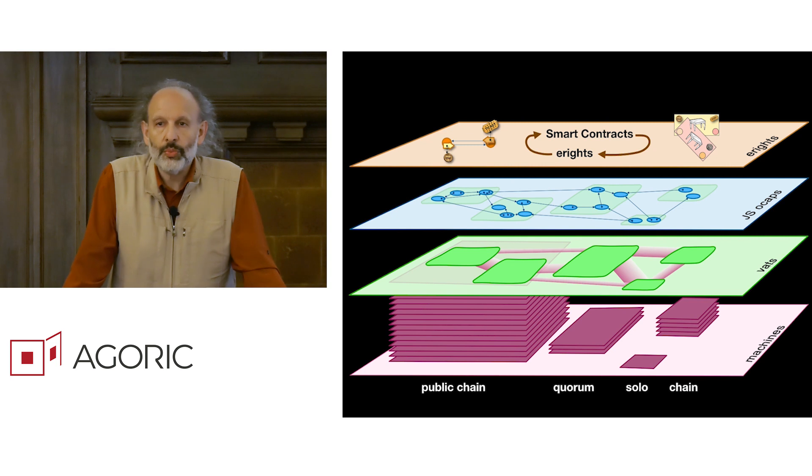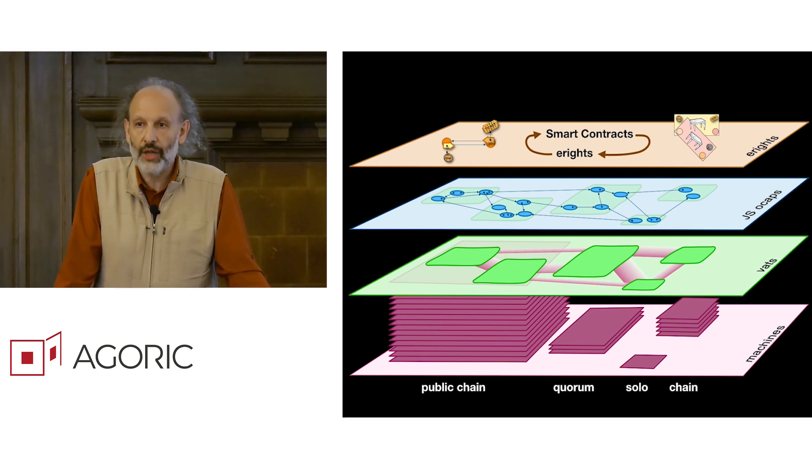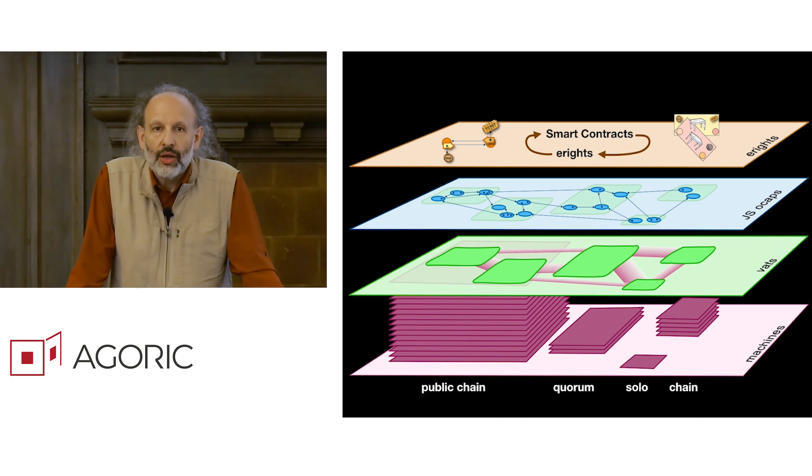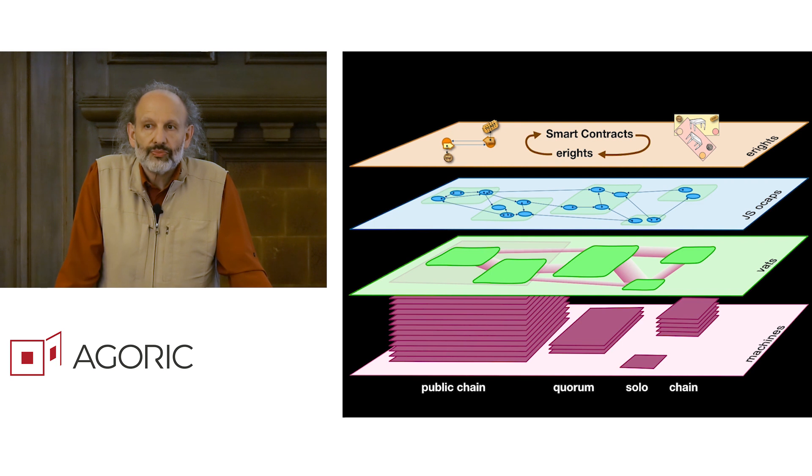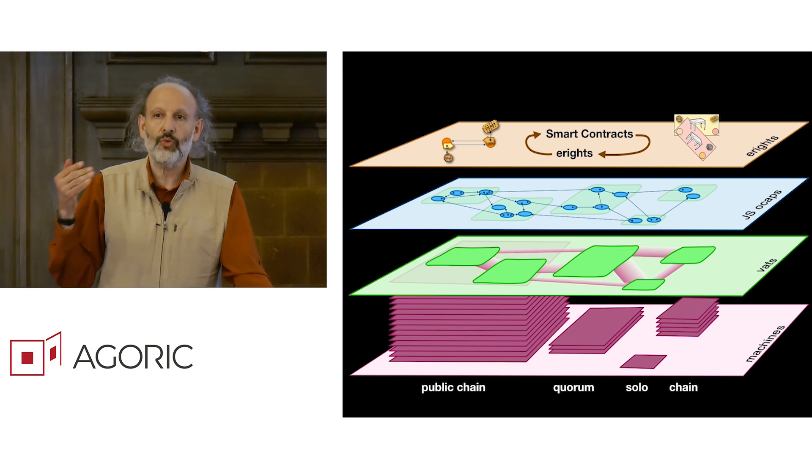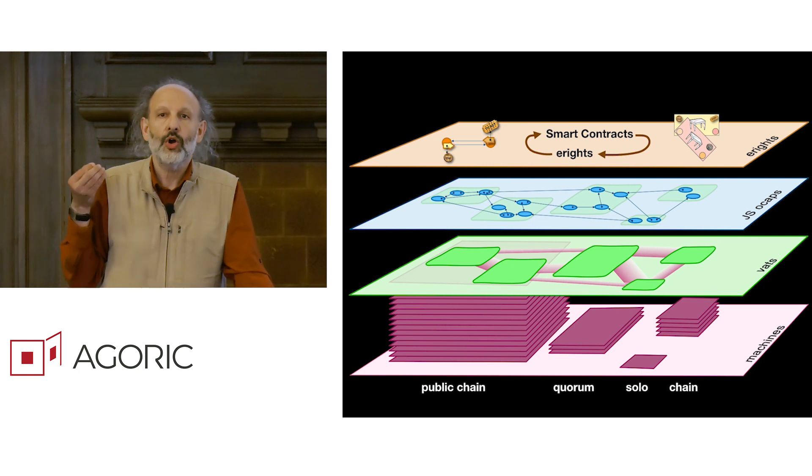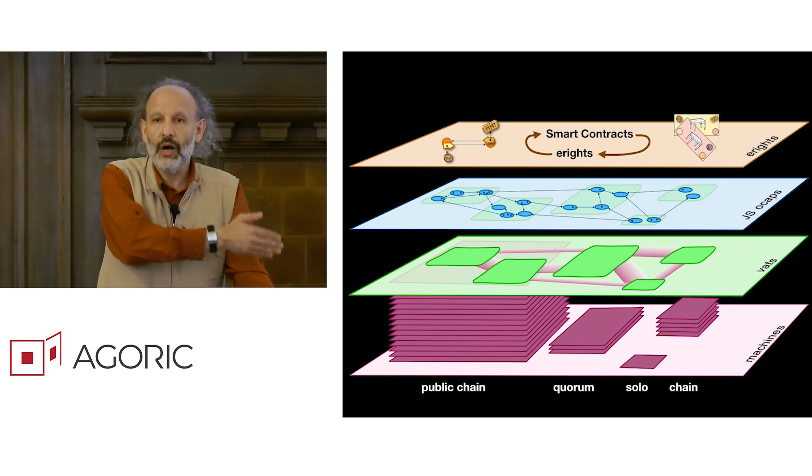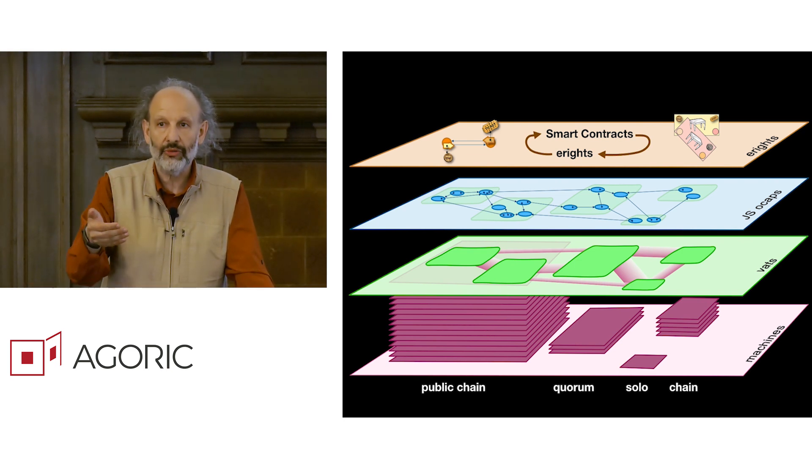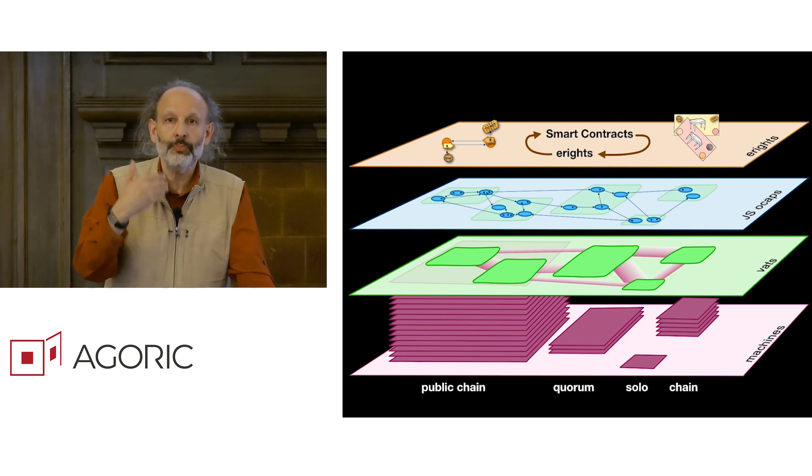And we use our system of secure distributed objects to build our smart contracting system, our system of electronic rights and smart contracts. We leverage the distributed object system, the secure distributed object system, so that we can write the smart contracts directly and simply as patterns of objects. Our smart contracts themselves are not expressed using cryptographic concepts. We invest in the hard work of designing cryptographic protocols. We invest in it once to create the system of distributed secure objects. And once we have that in place, we can now express the smart contracts simply as patterns of objects.